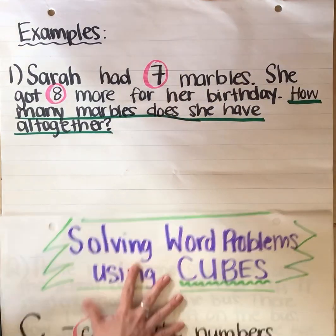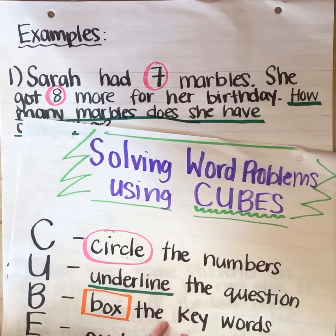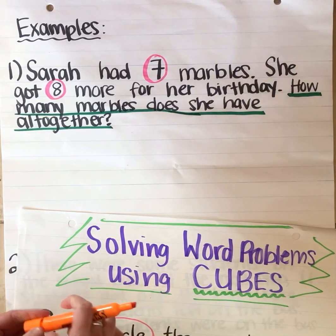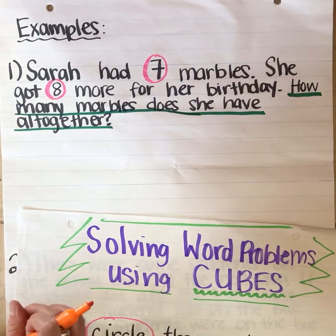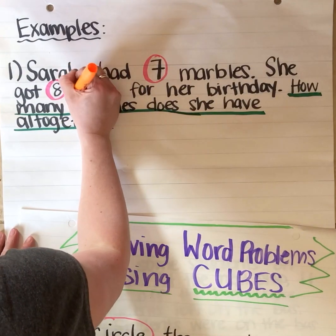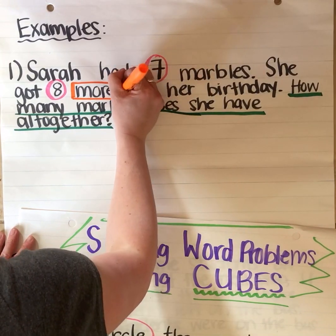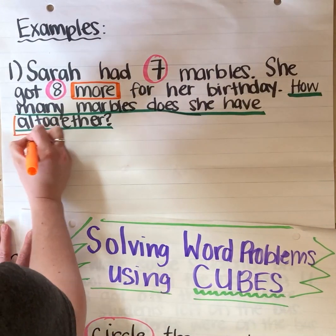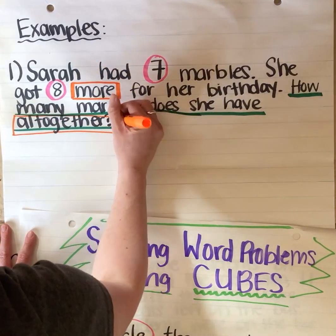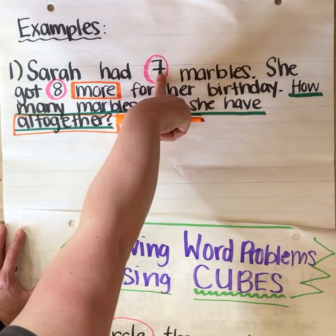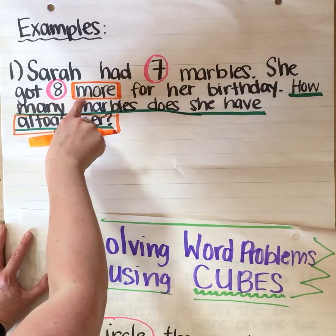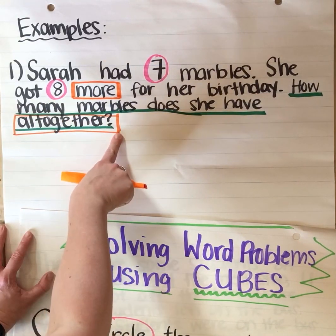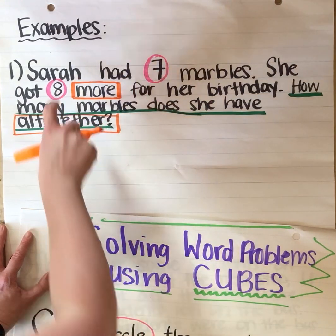And then the next step is to box the key words. I'm going to use my orange marker and look for some keywords. Sarah had seven marbles. She got eight more for her birthday — that word more is very important. How many marbles does she have all together? I'm also going to look at all together as an important word, because both of these words tell me she had a number and then she added to that number. That's what more means. And all together is another way to say what is the sum, or what is the answer if you add the two numbers together.